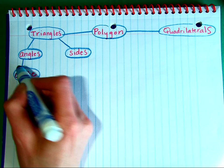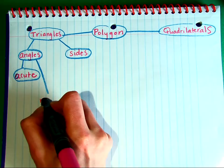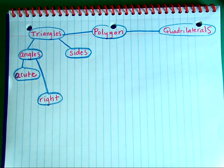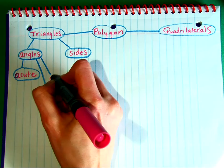The second way is if the triangle has one right angle with two acute angles — we call it a right triangle. And the third way is if one of the angles in the triangle is greater than 90 degrees, that's an obtuse angle, so we can call it an obtuse triangle.